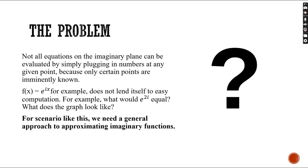The problem: not all equations on the imaginary plane can be evaluated by plugging in numbers, because only certain points are known. Consider the function e to the ix. It's not easy to compute, because it is not possible to calculate e to the 2i or e to the 3i. What does the graph look like? For a scenario like this, we need a general approach to approximating imaginary functions.